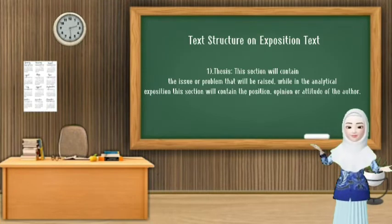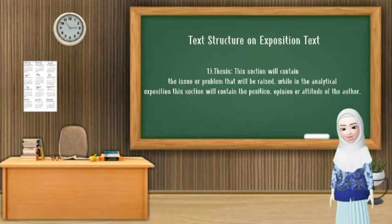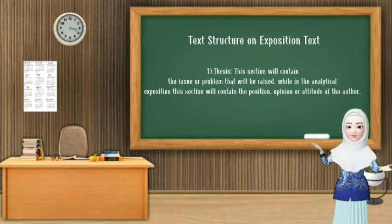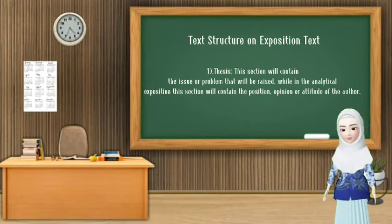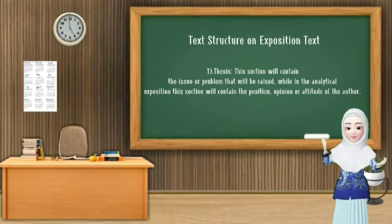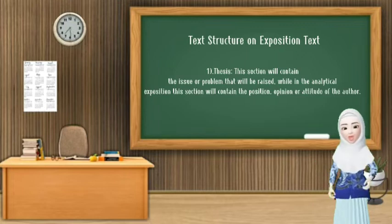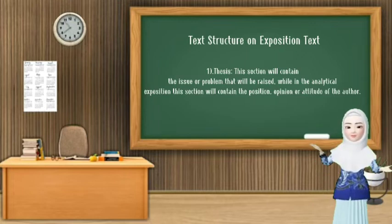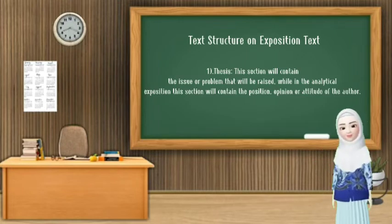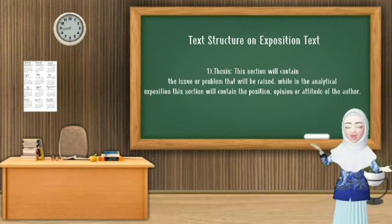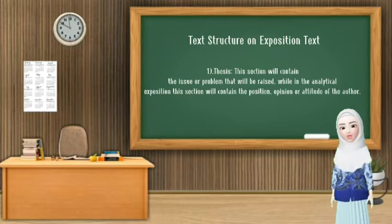For the next topic: text structure of exposition text. For the first structure is thesis. This section will contain the issue or problem that will be raised. While in the analytical exposition, this section will contain the position, opinion, or attitude of the author.